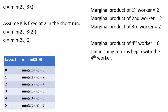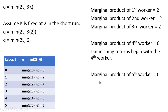Diminishing returns to labor begin with the fourth worker. When we hire the fourth worker, marginal product falls — it goes from 2 with the third worker to a marginal product of 0 with the fourth worker. The marginal product of the fifth, sixth, and seventh worker will also be 0.